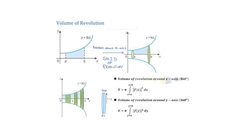The volume of any cylinder is π times r squared times h. In this example, the radius equals the y value, so it's simply y. The width of the cylinder is delta x. So the volume of cylinder 1 is π·y₁²·Δx, cylinder 2 is π·y₂²·Δx, and so on. Adding all volumes from the lower to the upper limit gives the total volume of the solid.